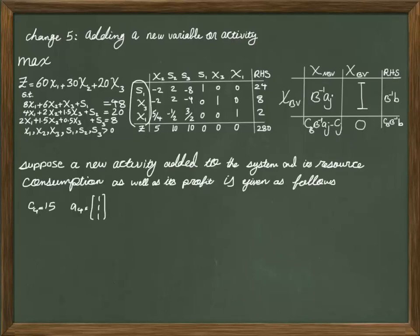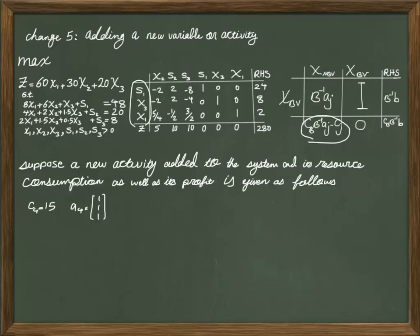Suppose that a new activity is added to the system and its resource consumption, as well as its profit, is given as follows. Your new product, if you start producing it, is going to have $15 per unit as profit. The amount of resources needed for the three constraints is 1, 1, and 1. To understand whether the current production plan remains feasible or not, we have to calculate the coefficient of that non-basic variable in the row of Z.